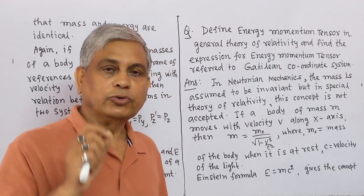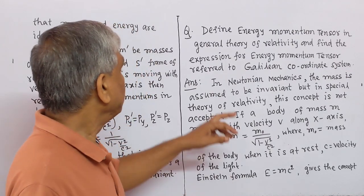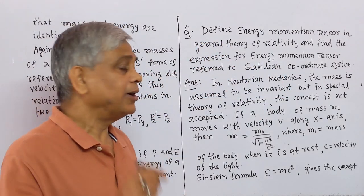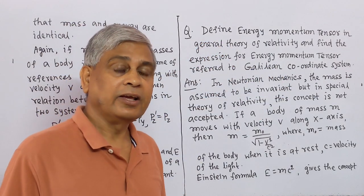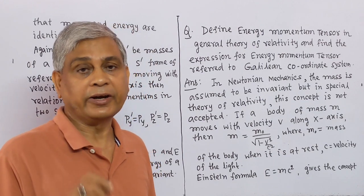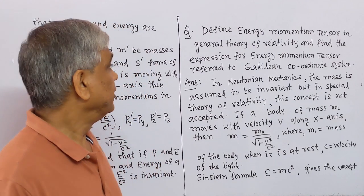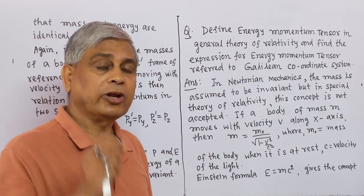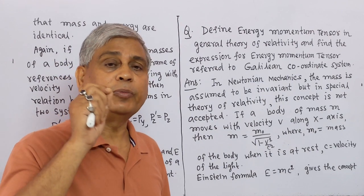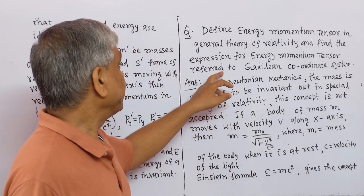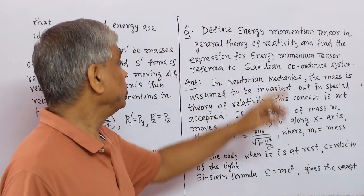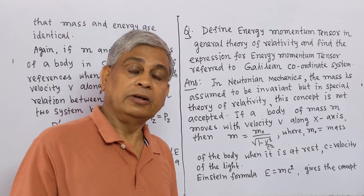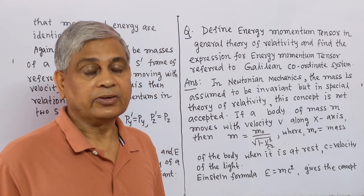Now, we solve a question. The question is: define the energy-momentum tensor in General Theory of Relativity, and find the expression for the energy-momentum tensor referred to a Galilean coordinate system. Now, we solve this.